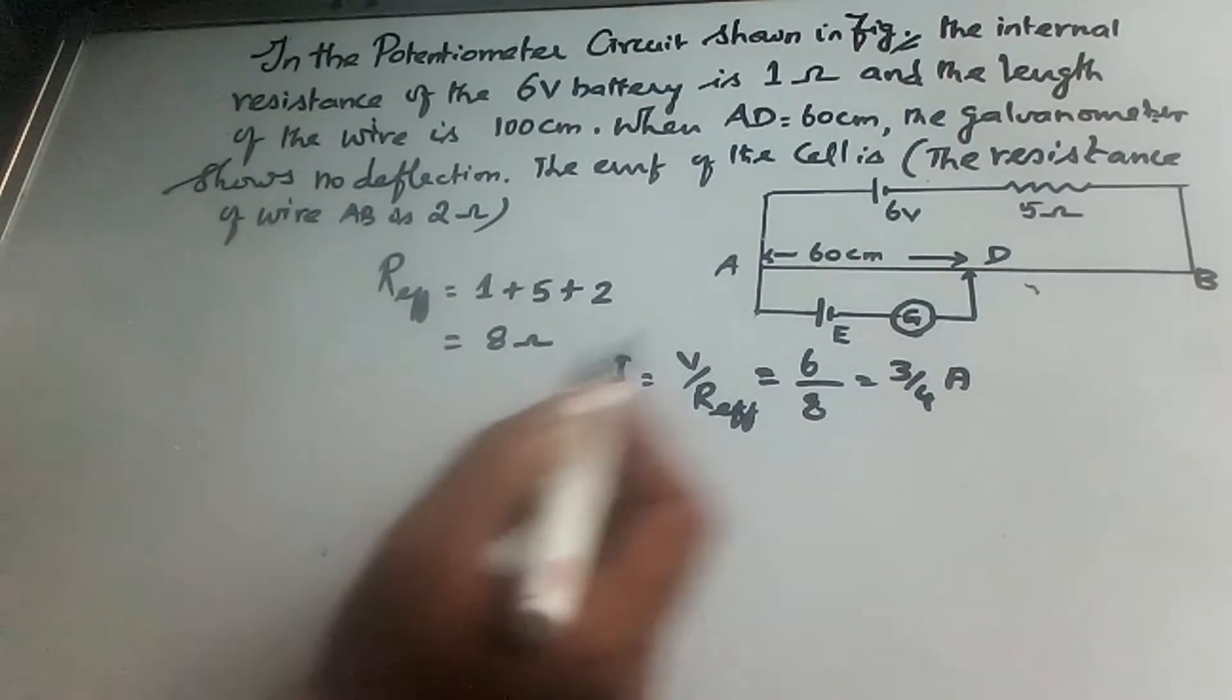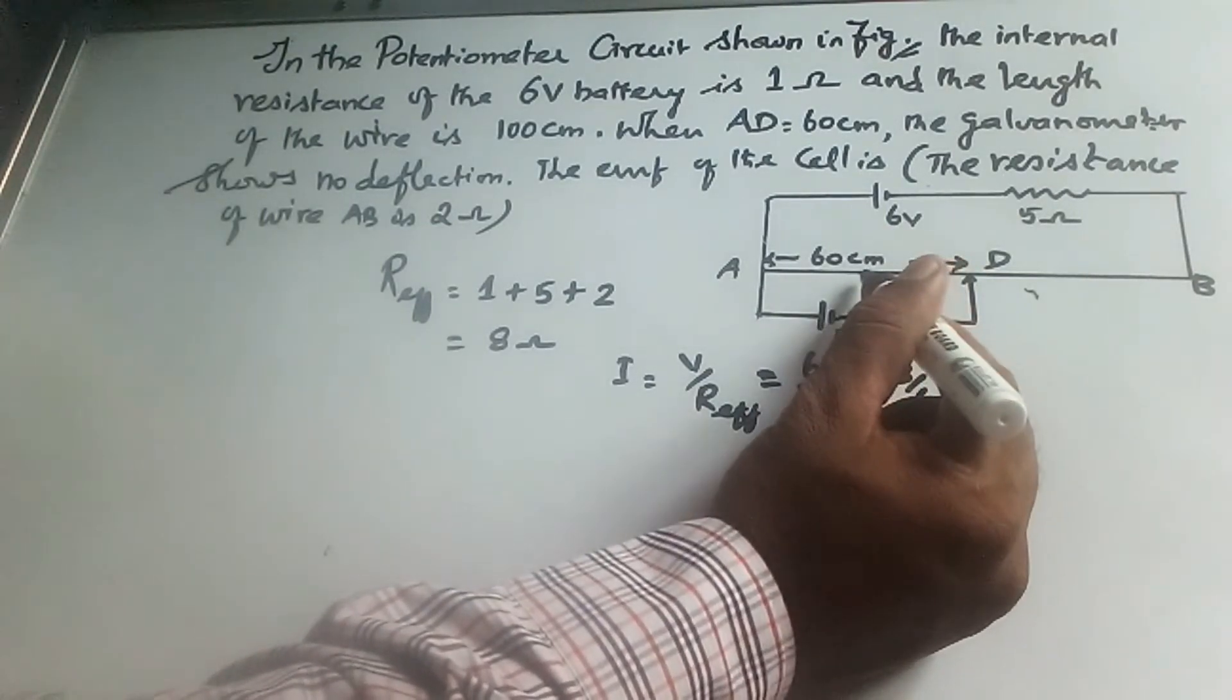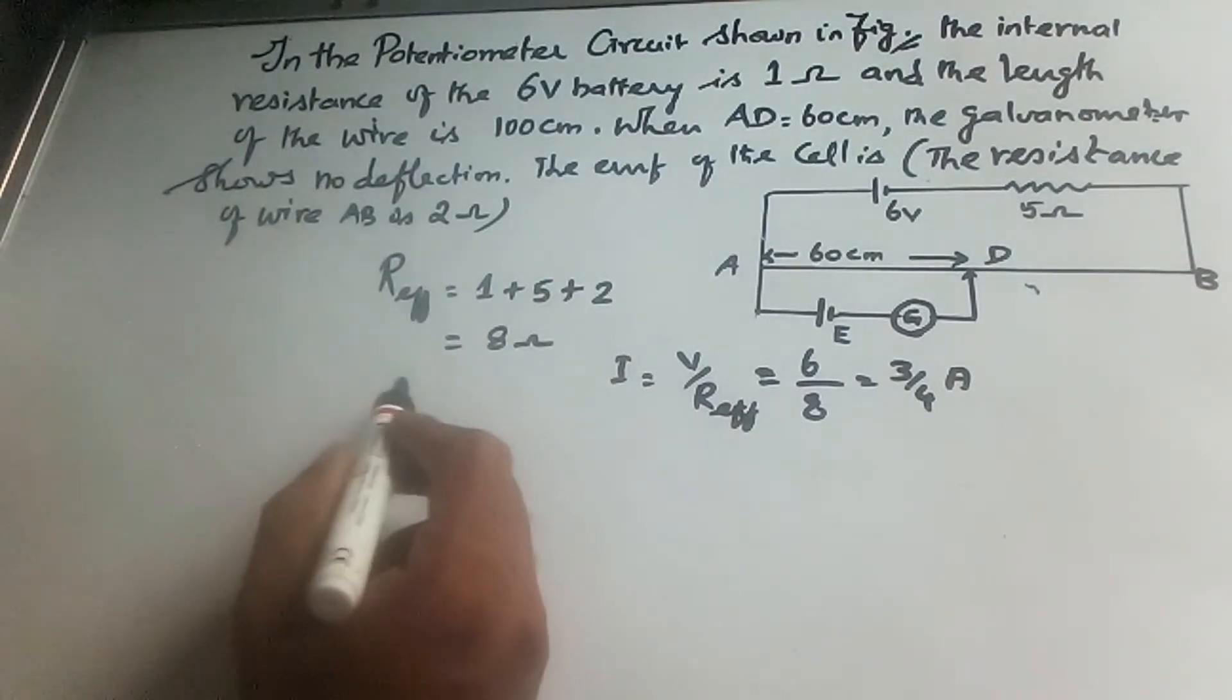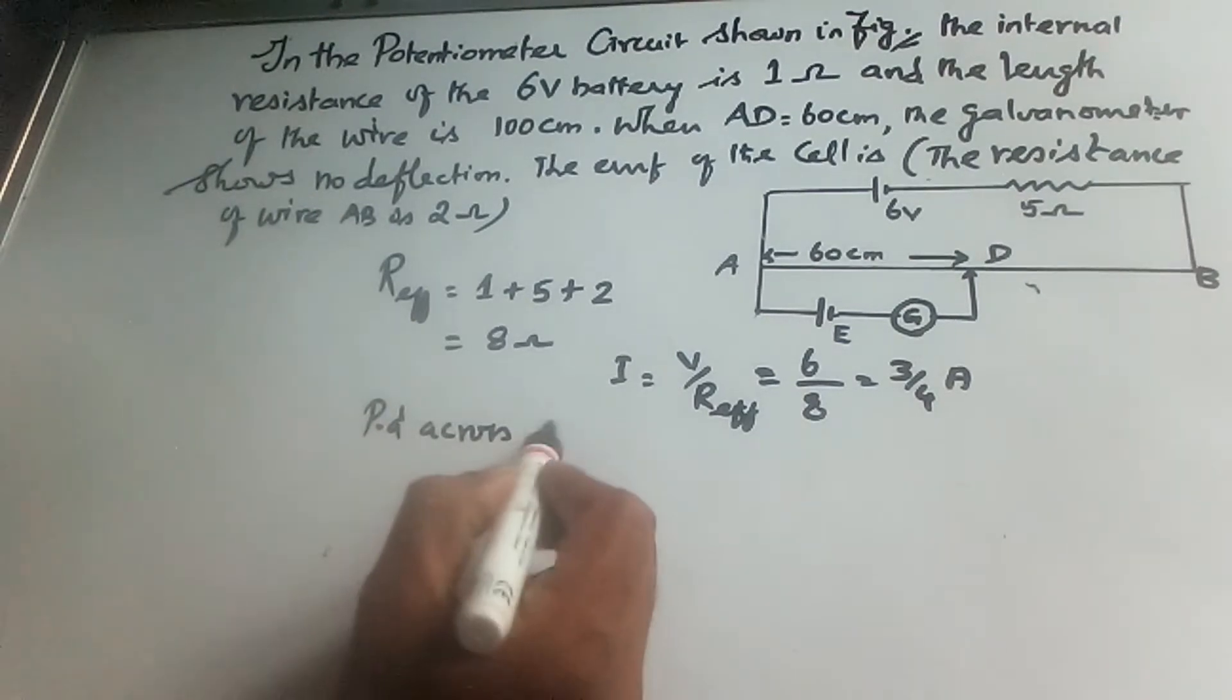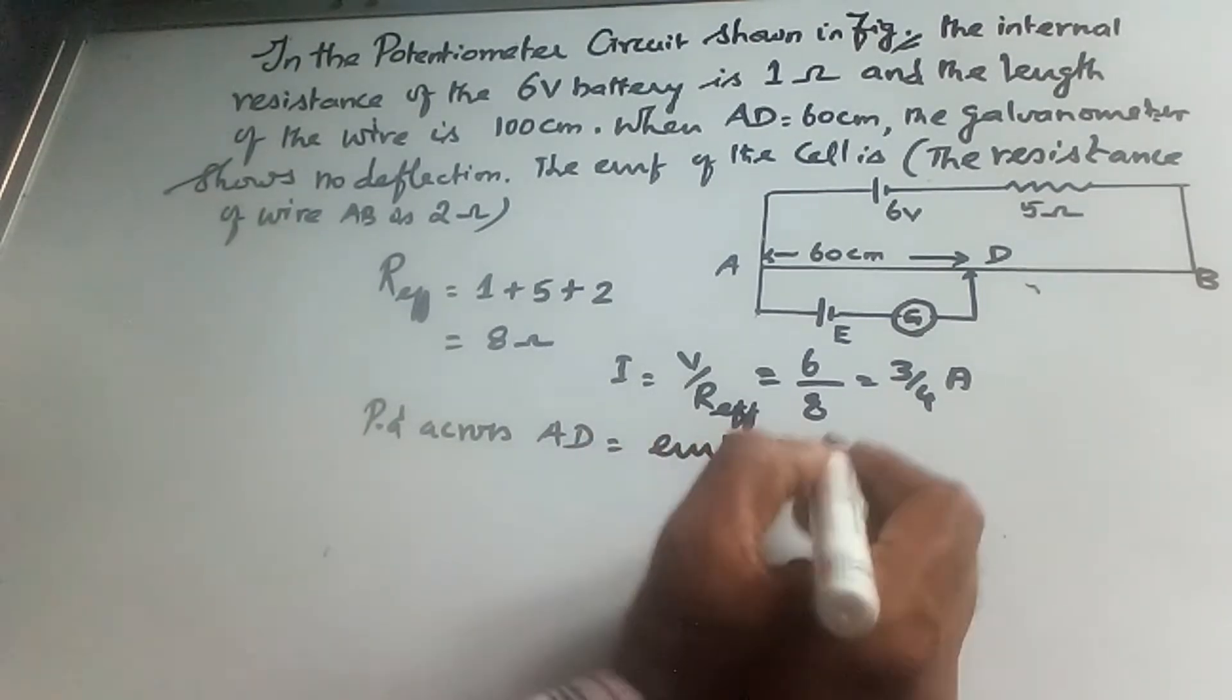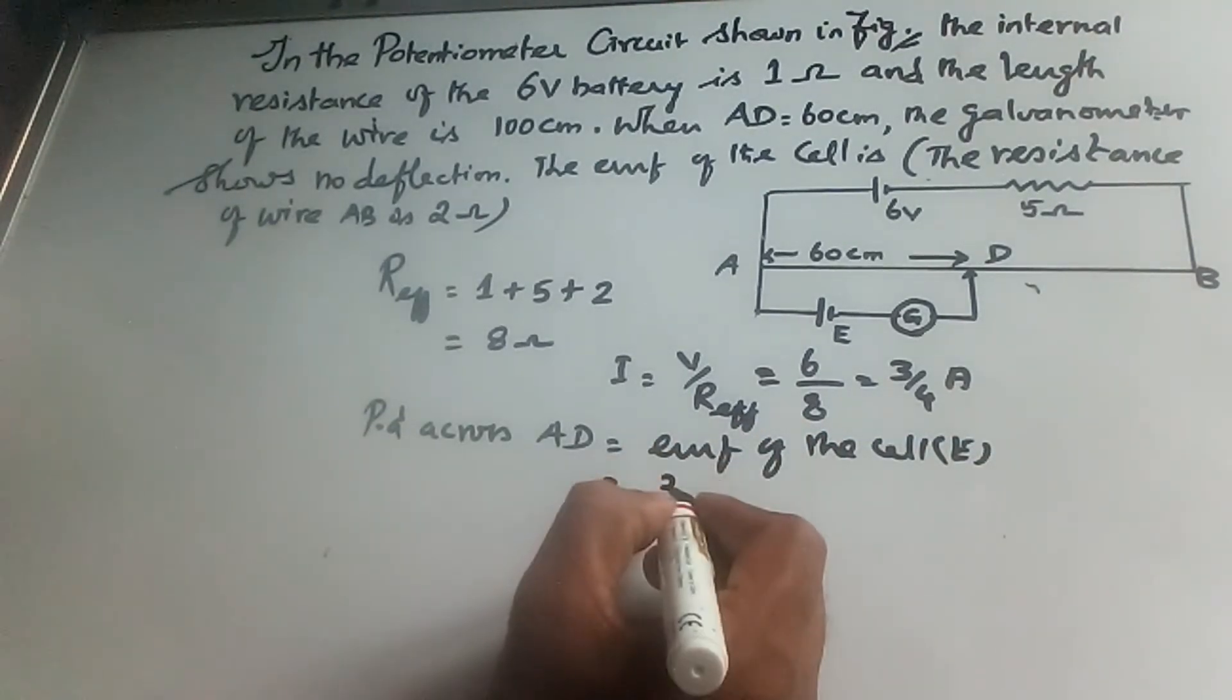Current of 3 by 4 amp flows through AB section. The PD across AD equals the EMF of the cell. Potential across AD is 3 by 4 A times the resistance.